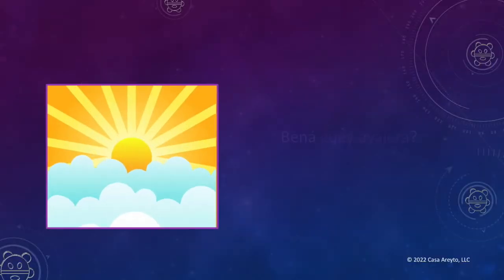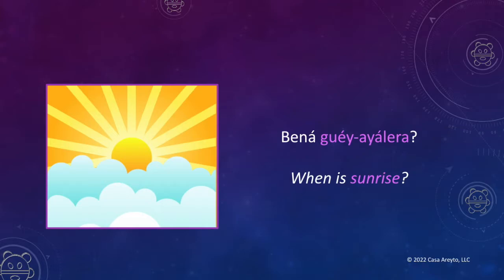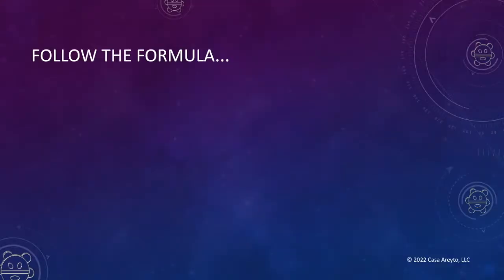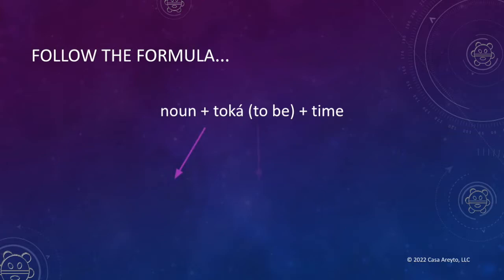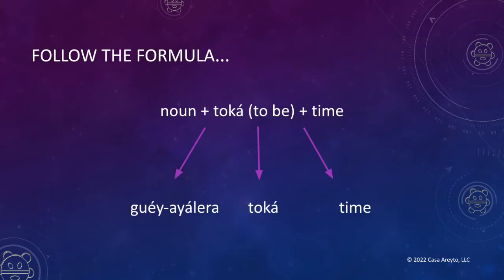Let's start with the first question: Bena guayaleta — when is sunrise? To answer the question, you just need to follow this simple formula. You start with the noun, then you add the verb toca, which means 'to be,' then you add the time. Simple, right? So let's try it out.